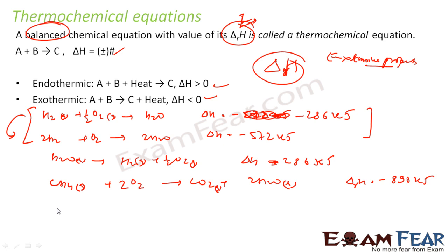You can have more examples, for instance, N2 plus H2 gives NH3. You balance it: N2 plus 3H2 gives 2NH3, and delta H will be minus 92.3 kilojoules. This is an example of a thermochemical reaction.